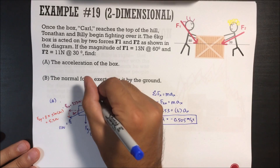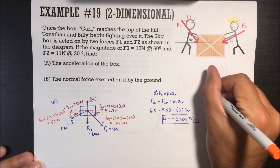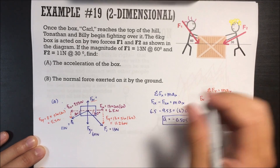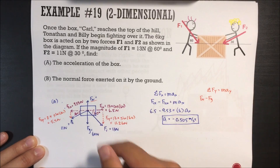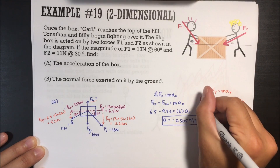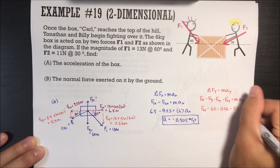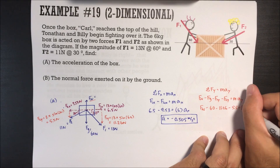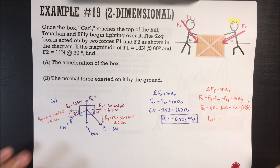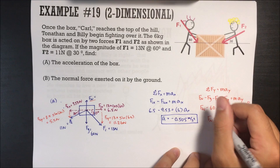The normal force exerted on it by the ground — since the normal force is in the y direction, we look at everything in y. Sum of all forces in y equals mass times acceleration in y. We have: normal force going up; force of gravity going down; F1Y going down; F2Y also going down; equals mass times acceleration in y. The acceleration in y is zero, so this whole side is zero. Normal force equals 60 plus 11.26 plus 5.5, which gives us 76.76 newtons.